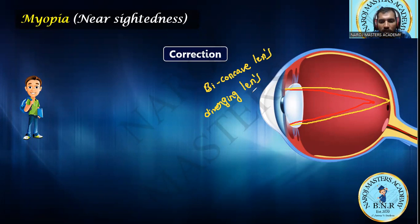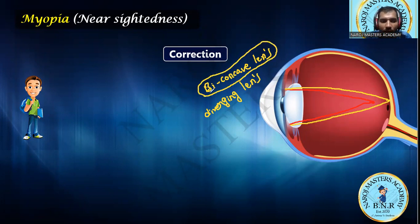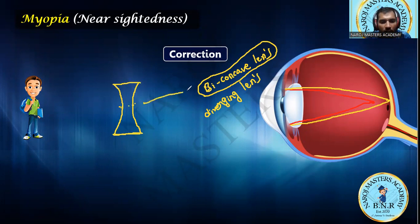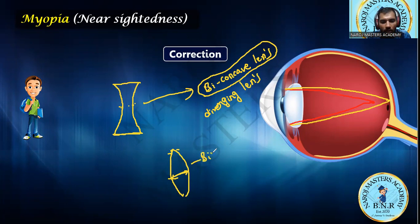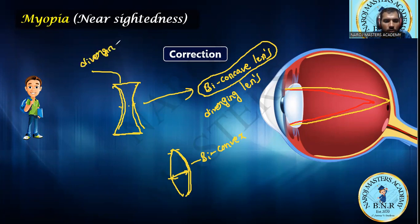People suffering from myopia wear spectacles with a biconcave lens. How can you identify whether a lens is biconcave or biconvex? If the middle surface is thin and the corner surface is thick, it is biconcave. If the middle surface is thick and the corner surface is thin, it is biconvex. Biconvex surfaces always bulge outward; biconcave surfaces always bulge inward. A biconcave lens is a diverging lens, and a biconvex lens is a converging lens.